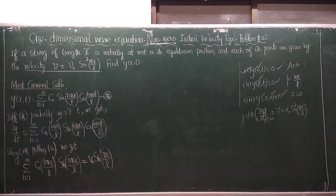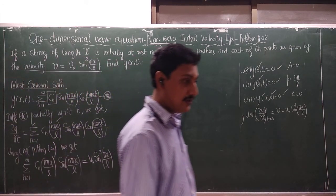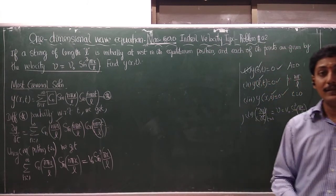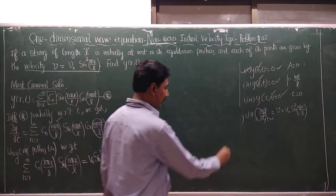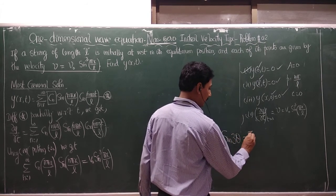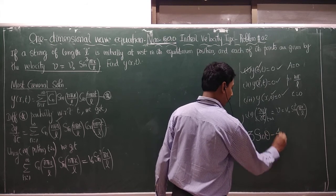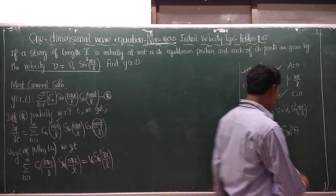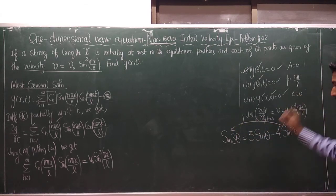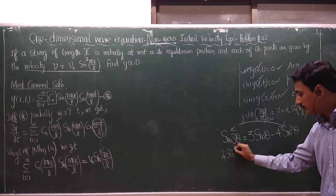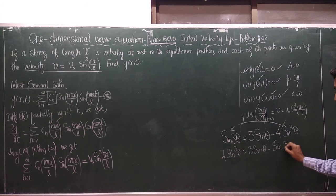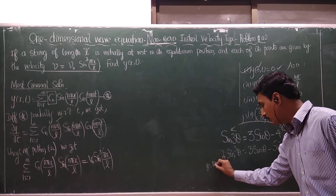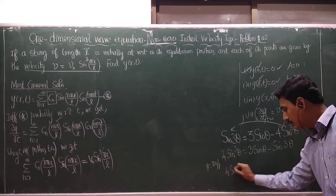Our aim is to find Cₙ. Since we have a trigonometric function on the right-hand side, we apply a trigonometric identity. We use the identity: sin 3θ = 3 sin θ − 4 sin³θ, which can be rewritten as 4 sin³θ = 3 sin θ − sin 3θ.